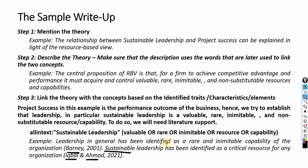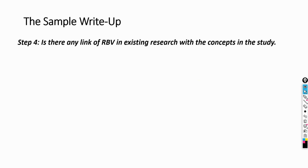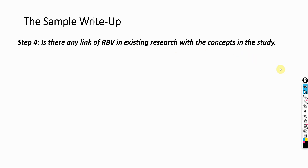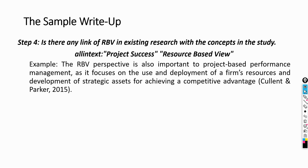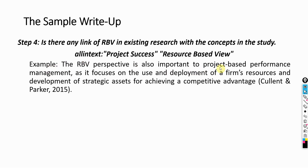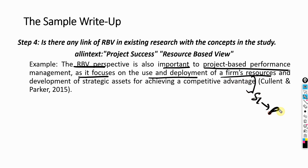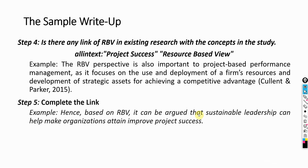So it is now established that leadership is a resource, and according to RBV, when you have a resource, it leads to improved competitive advantage and performance. Step 4: Is there any link of RBV in existing research with the concepts of the study? Has RBV been used with sustainable leadership or project success? Here is the example: the RBV perspective is also important to project-based performance as it focuses on the deployment of firms' resources. Now you have already established that sustainable leadership is a resource that can lead to achieving competitive advantage. Hence, based on RBV, it can be argued that sustainable leadership can help organizations attain improved project success.